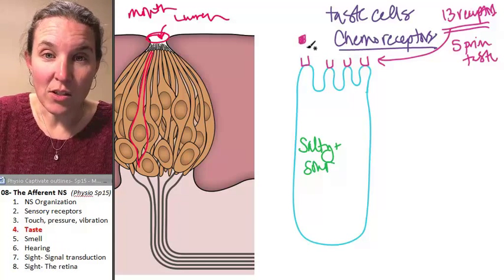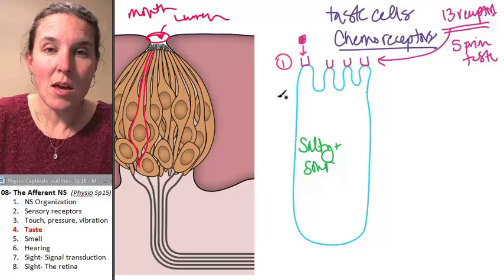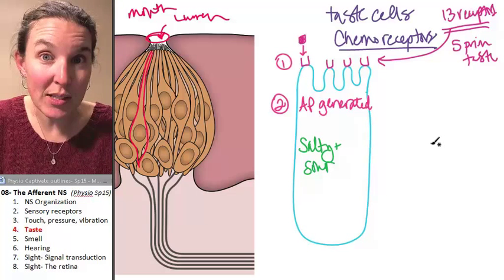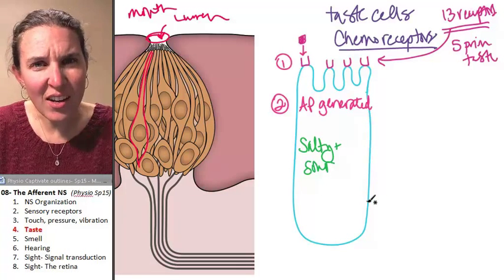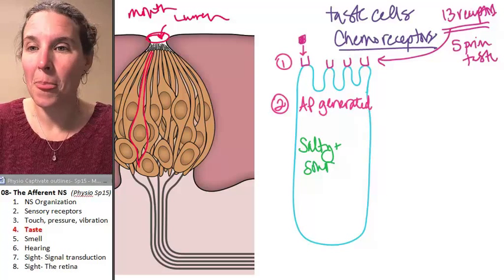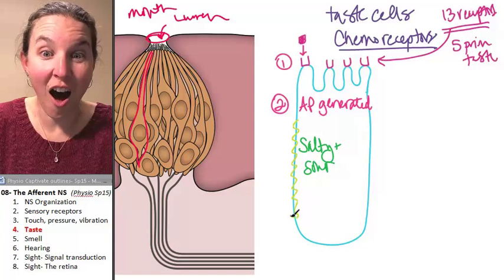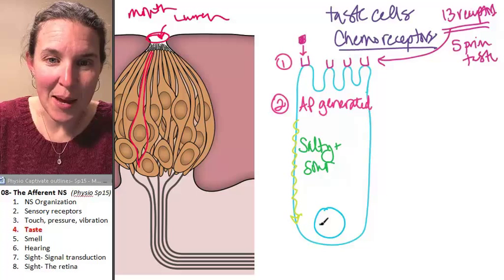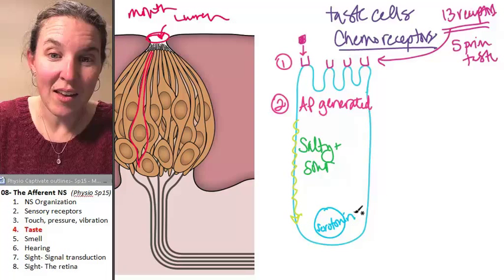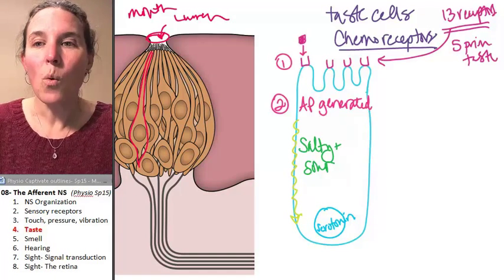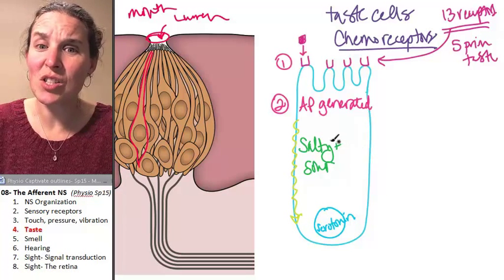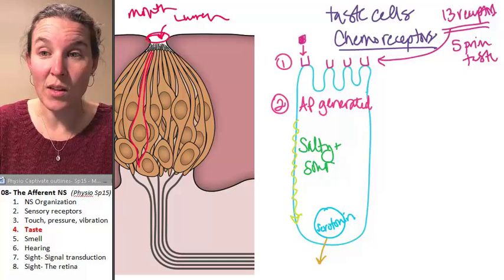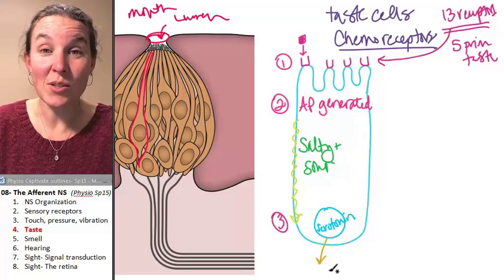First of all, a salty or sour molecule binds to the receptor. Second of all, an action potential is generated in this receptor cell. Does that make this thing a neuron? I don't know. Action potential is generated. Guess what happens when it reaches the end of this thing? This is not a nucleus. This is a bubble of serotonin. We think of serotonin as our feel good molecule. Well, it is also involved in sensations of taste, in sensations of salty and sour taste. So serotonin is then exocytosed into the synapse.